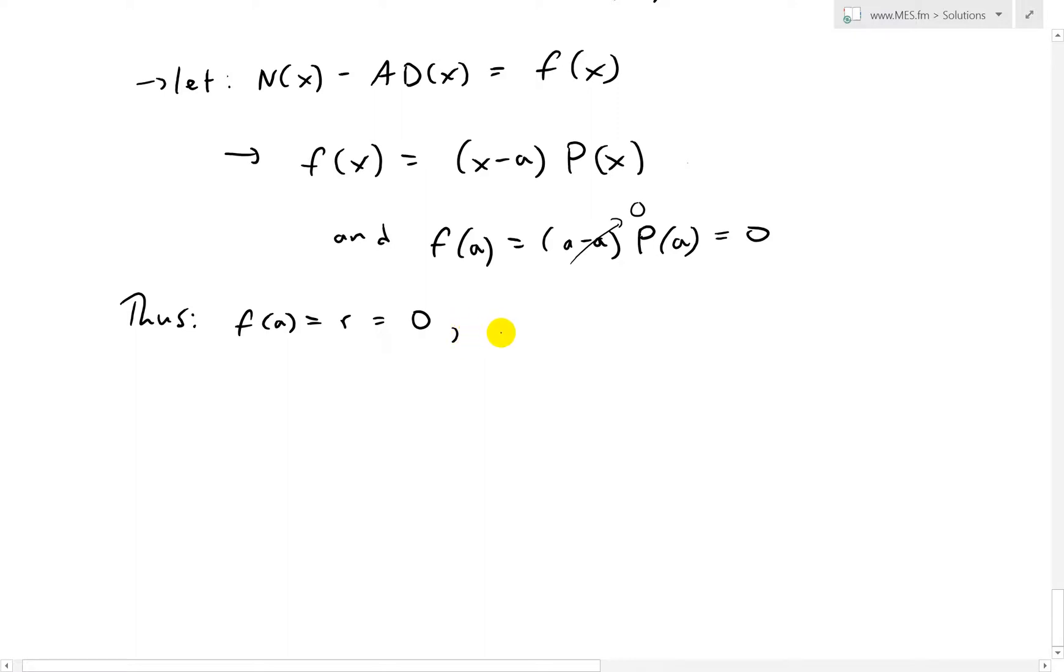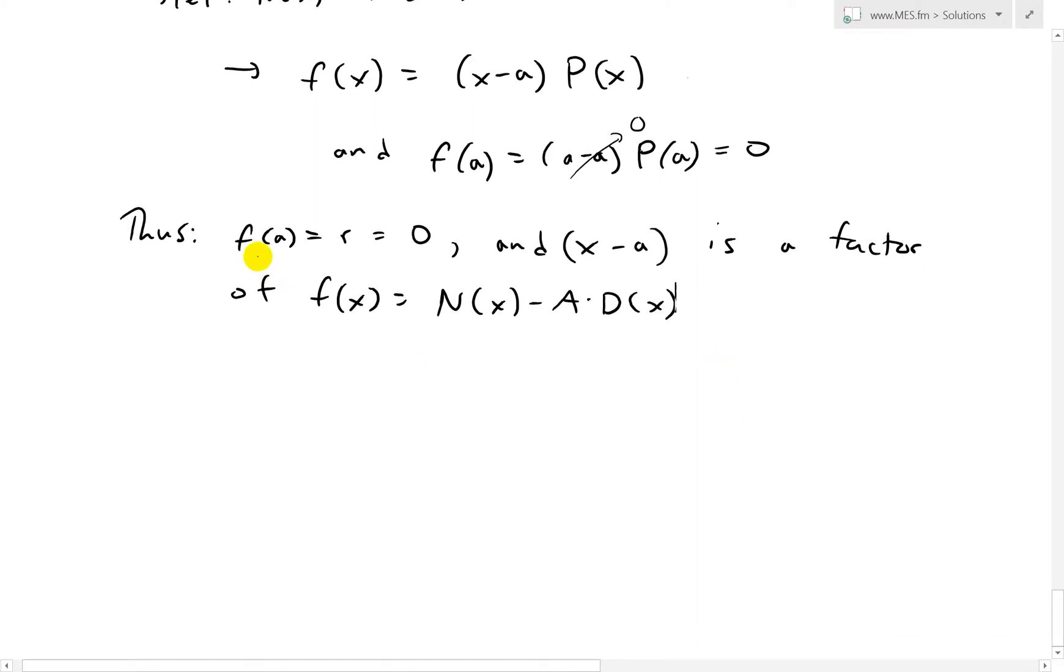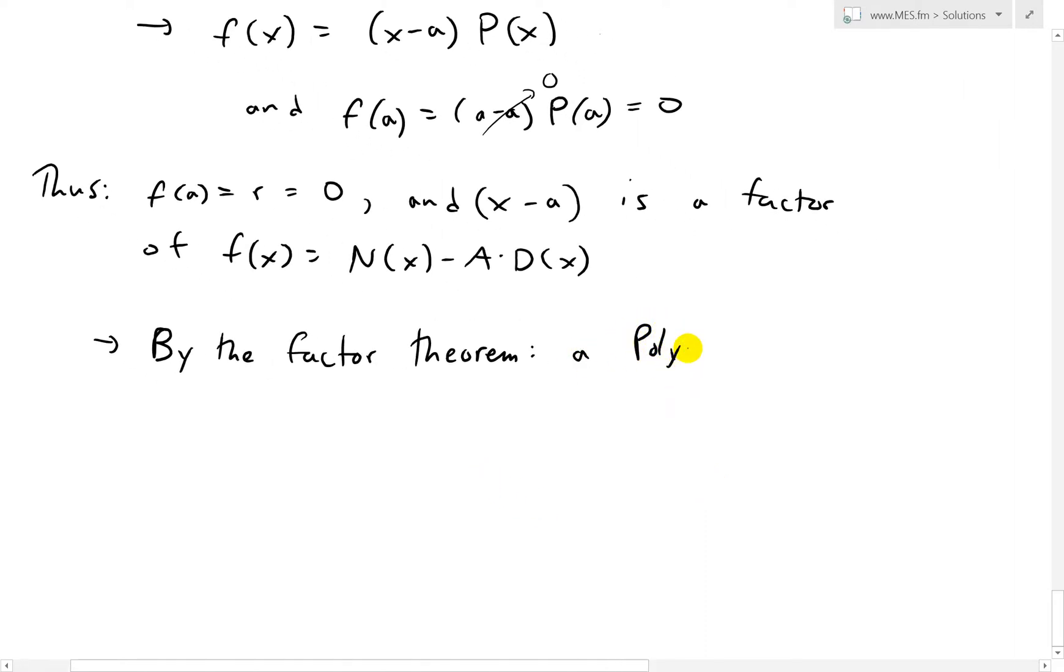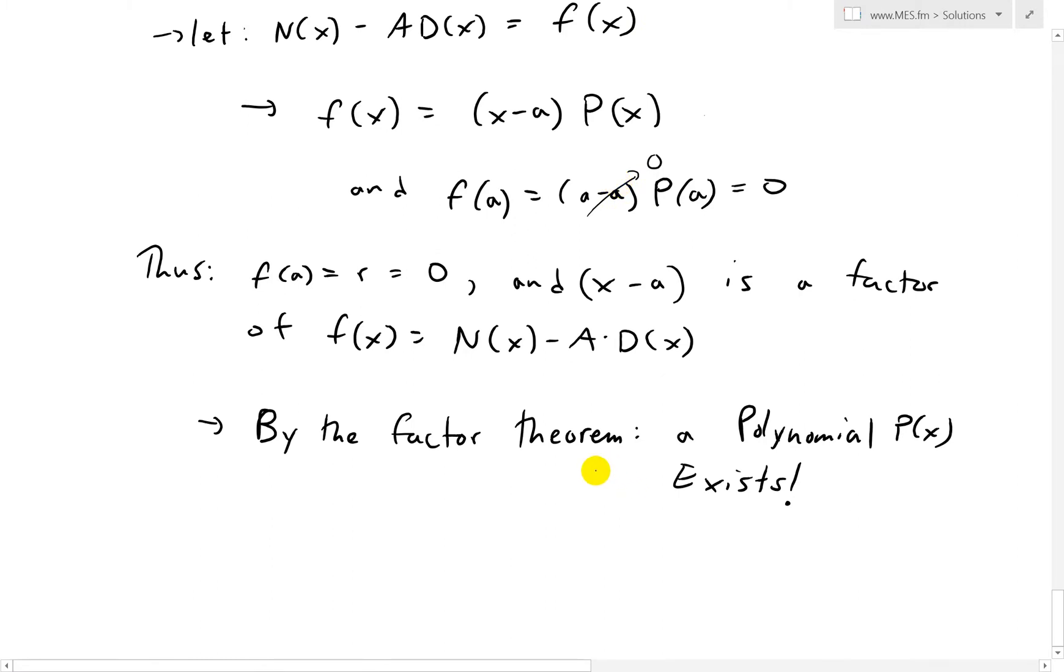And (X-A) is a factor of F(x), which just equals that difference N(x) - A*D(x). So it's just a factor of it. In other words, by the factor theorem, those were all polynomials we're dealing with. F(x), P(x), (X-A), those are all polynomials. So P(x) is, or there is a polynomial. A polynomial, we'll call that P(x), exists. So all we need to know is prove that it does exist. The characteristics of the degree are as shown above. But all we need to do is prove that this exists. So the polynomial does exist.